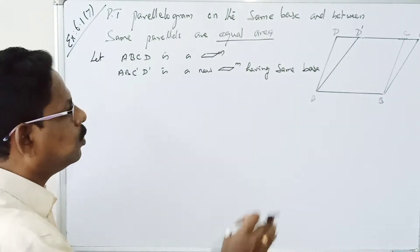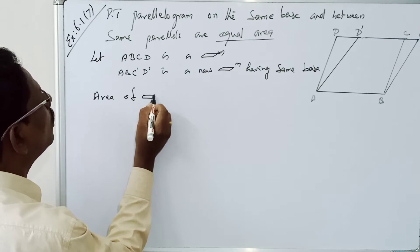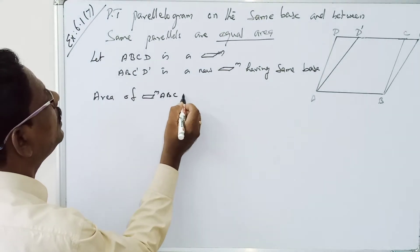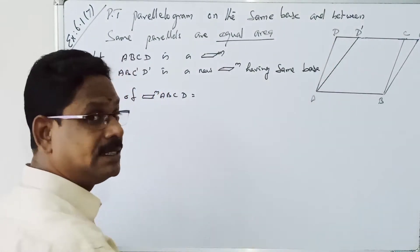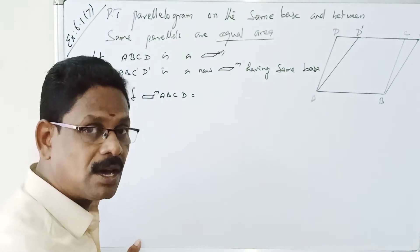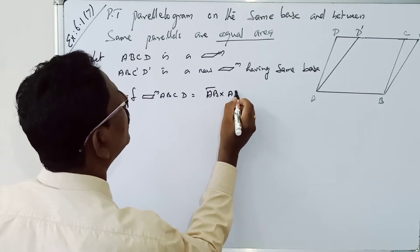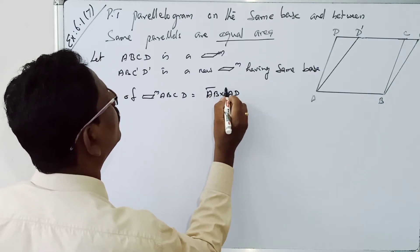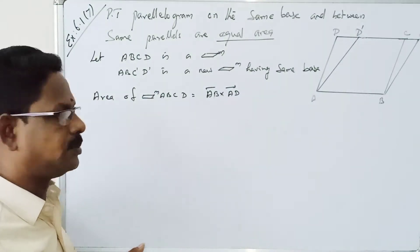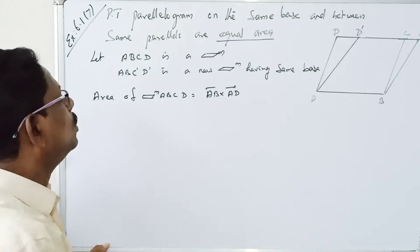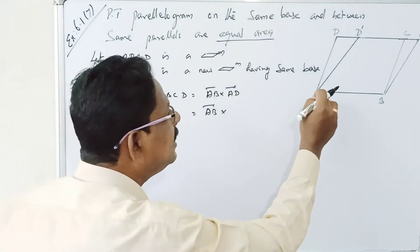Now, what is the area of parallelogram ABCD? The area of parallelogram ABCD is equal to AB cross AD. All of them are just a size — AB cross AD. So this is AB cross AD, that is equal to AB cross AD.